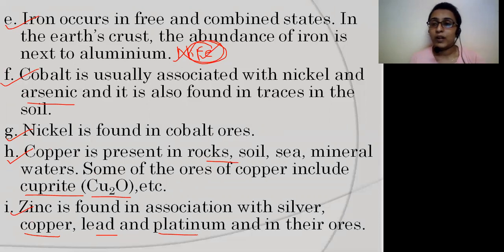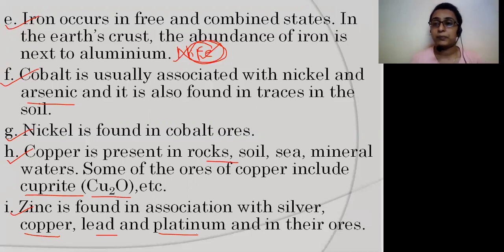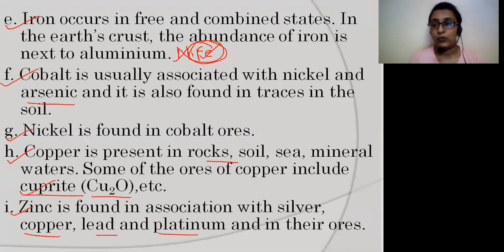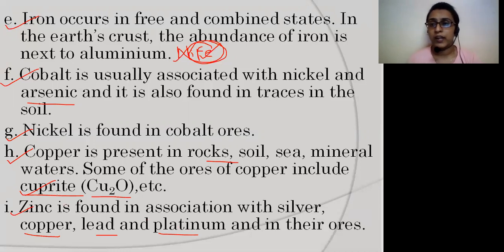You don't need to remember all of this for the exam. Just remember: manganese's ore is pyrolusite, copper's ore is cuprite, and chromium's ore is chromite. Also remember that manganese is never found in free state, while iron can be found in both free and combined state.